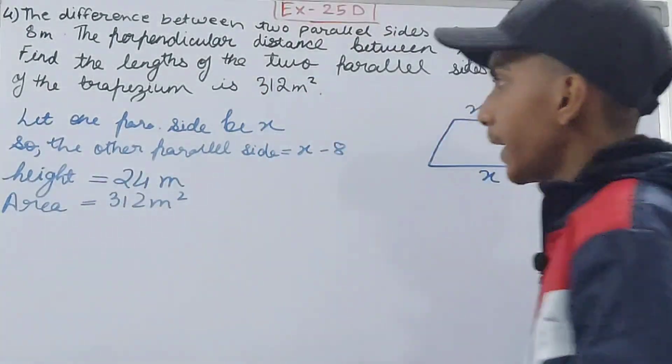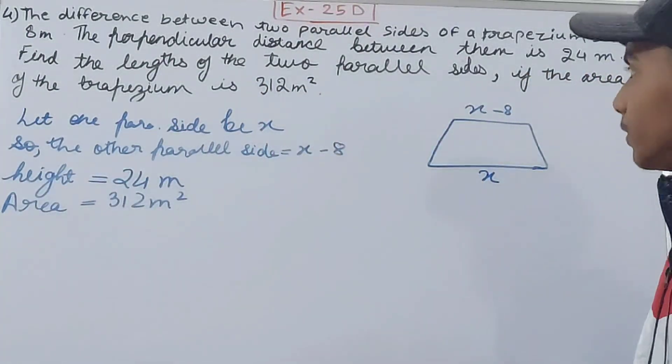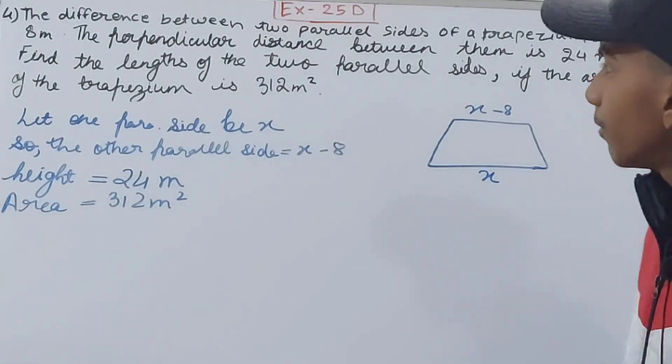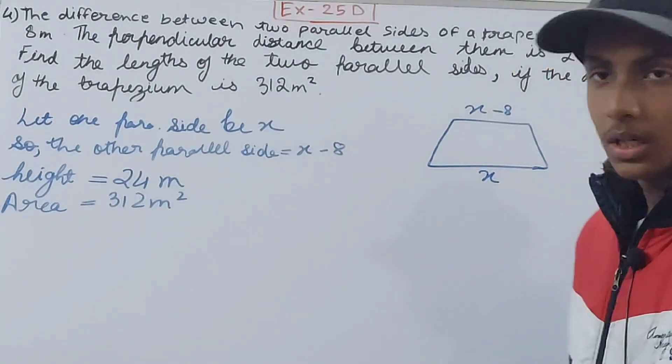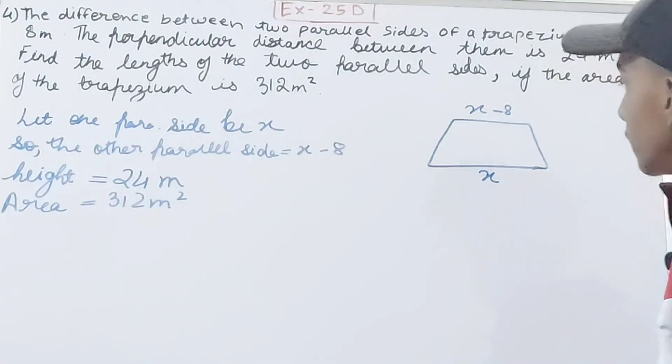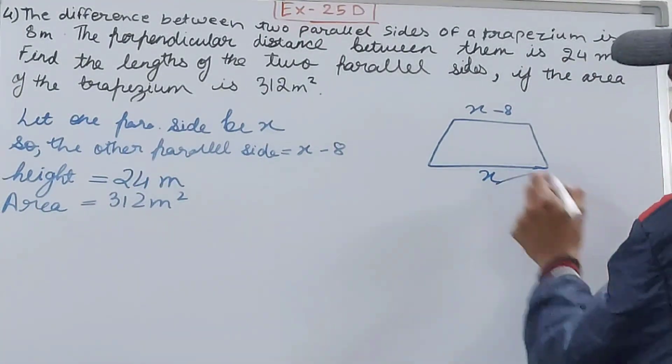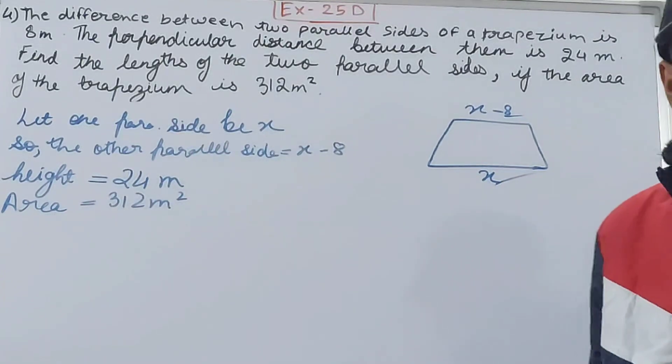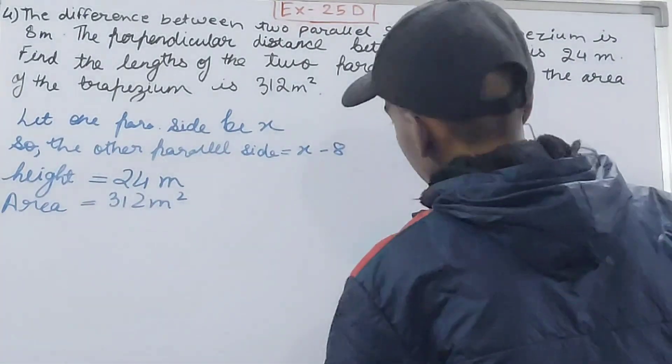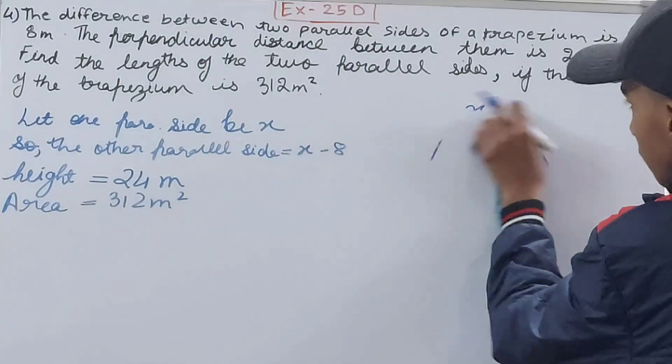Find the lengths of the two parallel sides if the area of the trapezium is 312 square meters. We have to calculate the value of X and the value of X minus 8.